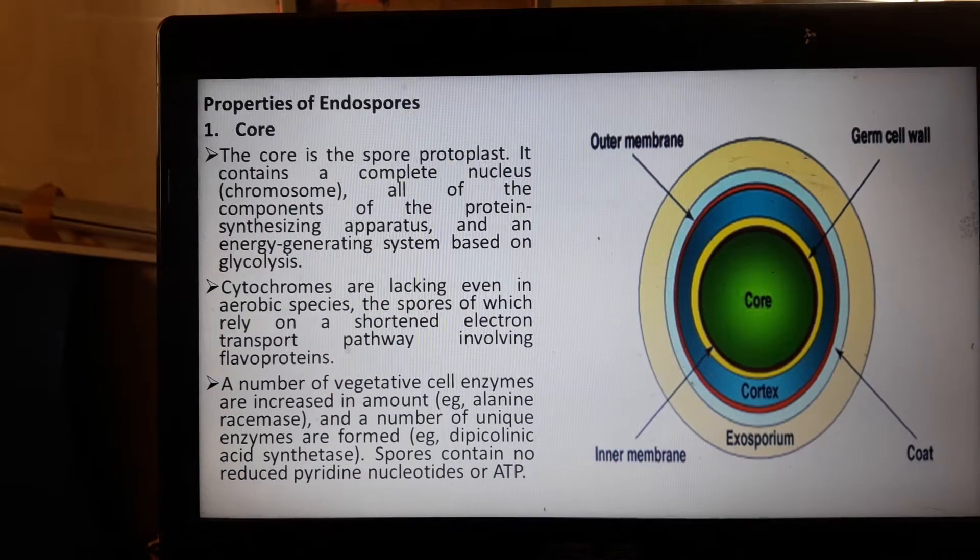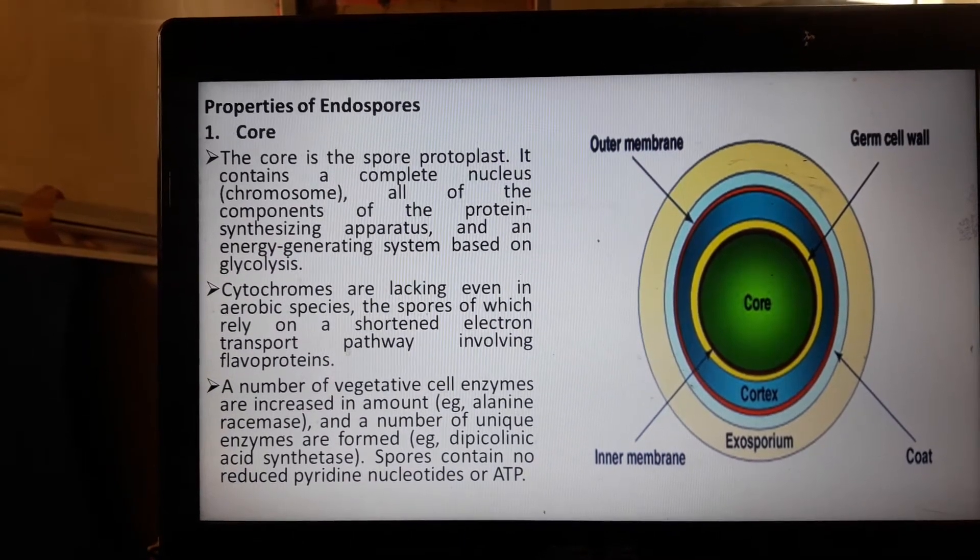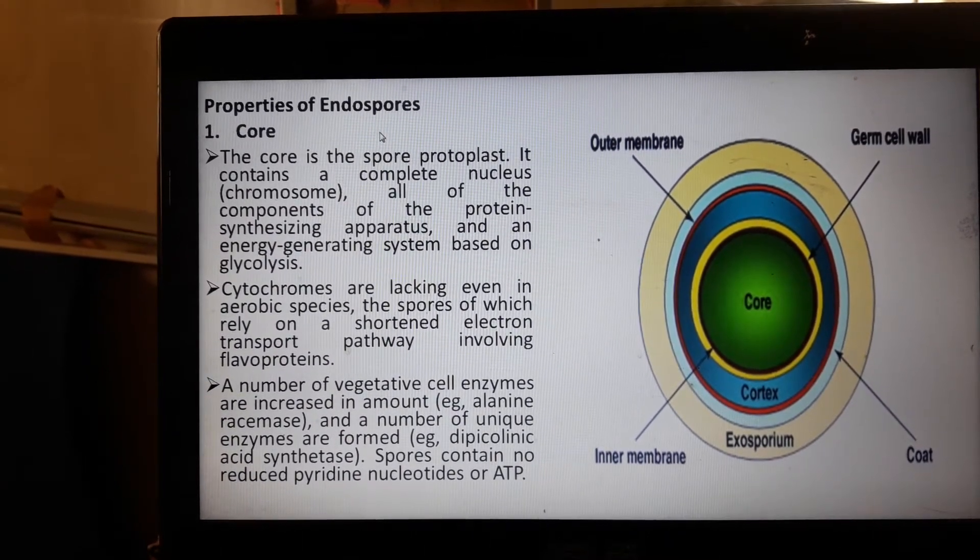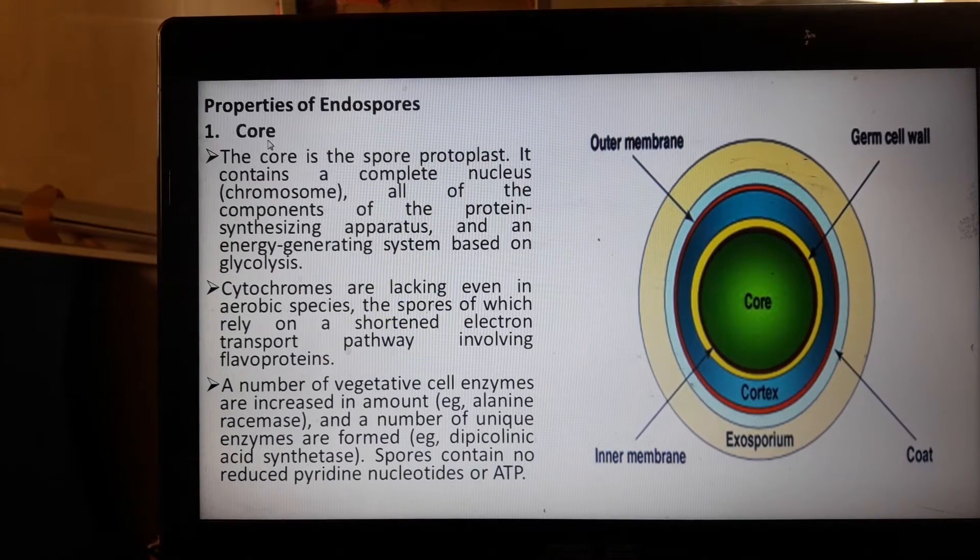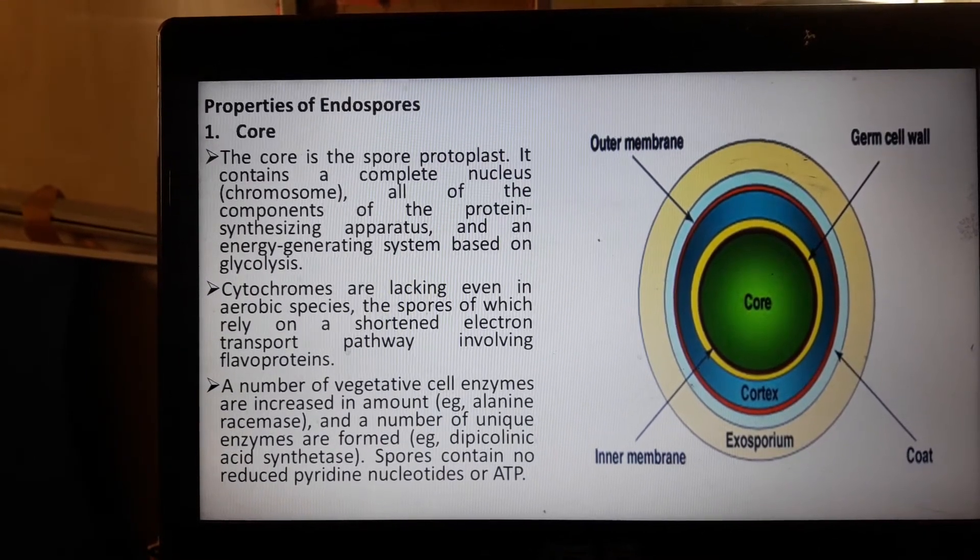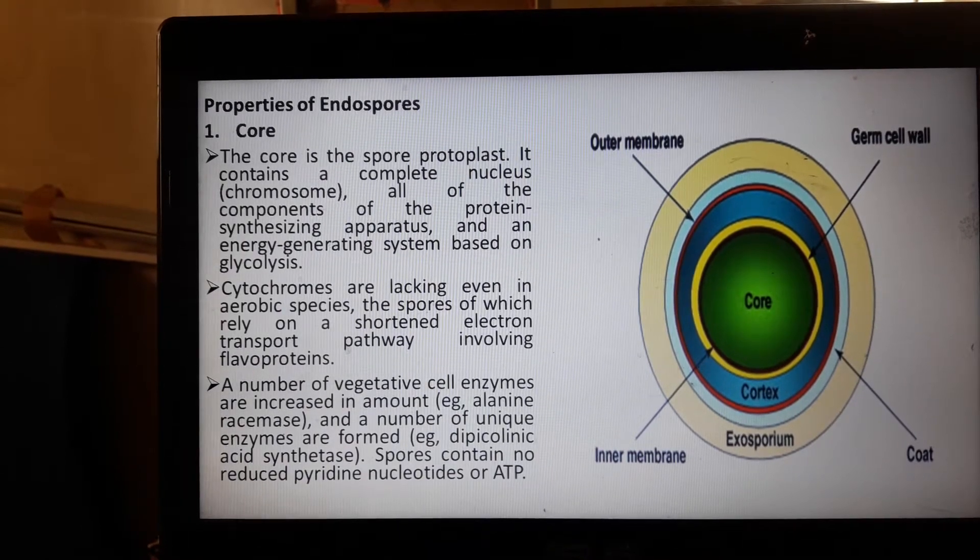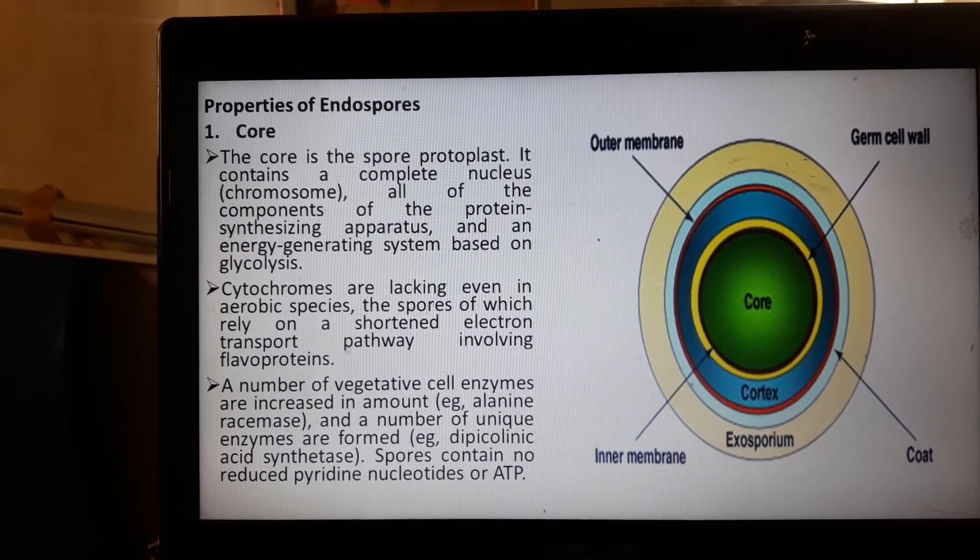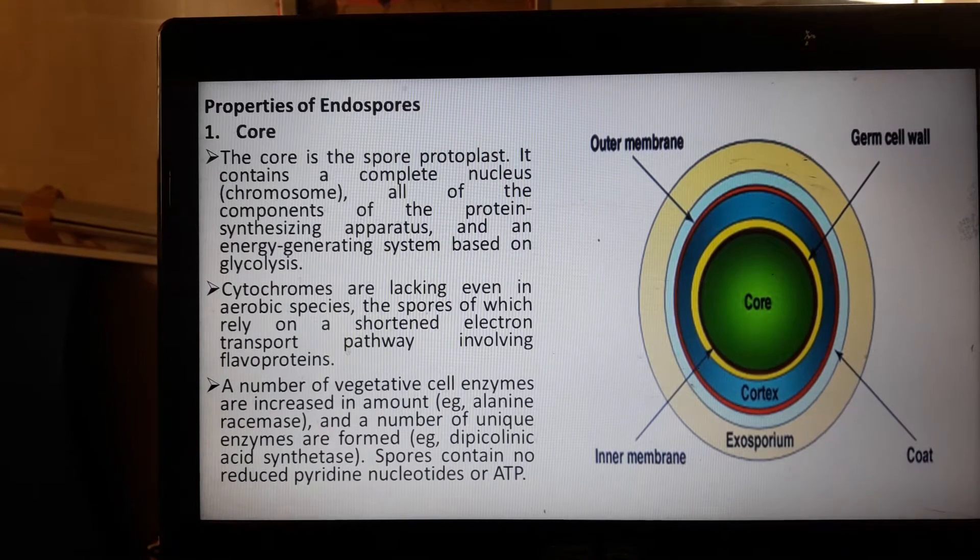To continue with our discussions of the sporulation process, we'll discuss the properties of endospores. The properties of endospores include the core, the coat, exosporium, the cortex, the spore wall, and the germ cell wall which generates from the spore wall.